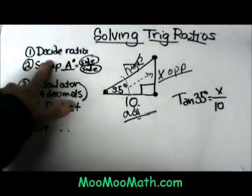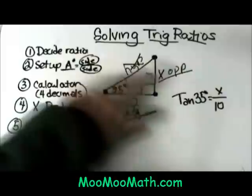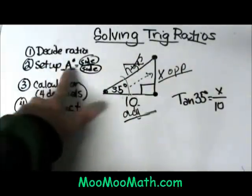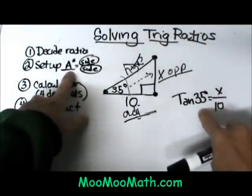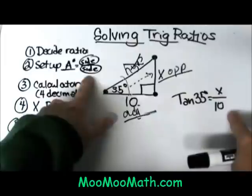So I've decided my ratio is the tangent function. I've set it up with the three missing parts, the angle and the ratio of the two sides. Now I'm going to grab my calculator.